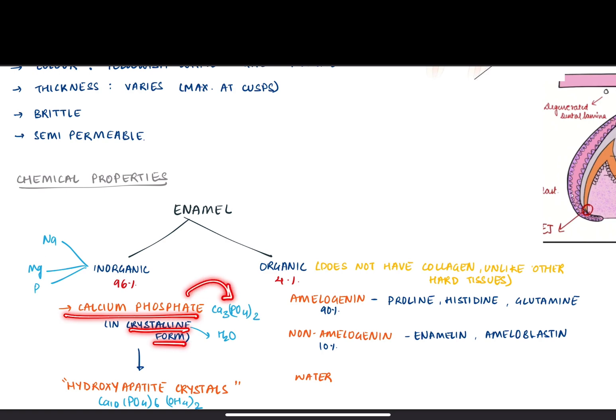This is the formula of calcium phosphate, which is Ca3(PO4)2. And when we convert it into a crystalline form, that is, add water,